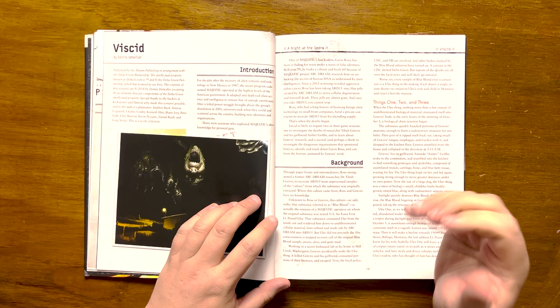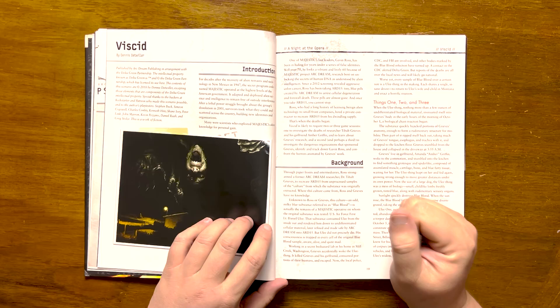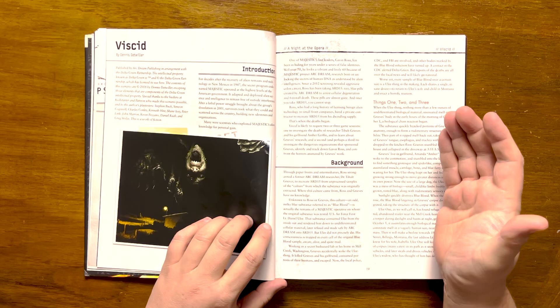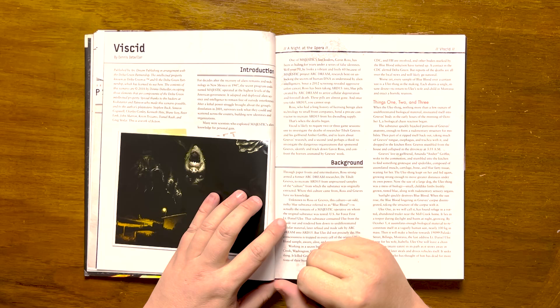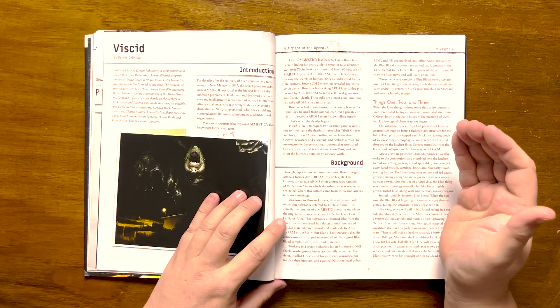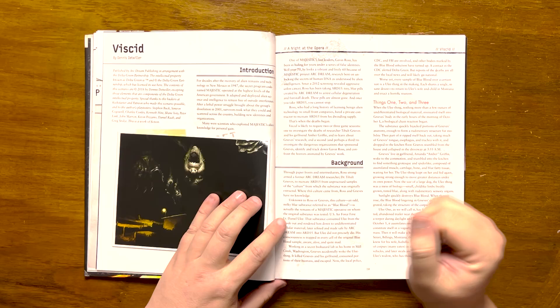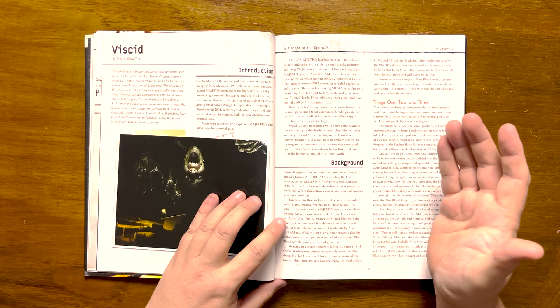Ross has coerced a former Arc Dream researcher, Dr. Tybalt Greaves, to recreate ARD-15 from some unprocessed tissue samples that it was originally extracted from. The culture known as blue blood is the remains of a Majestic operative that it was originally tested on, US Air Force First Lieutenant Daniel Uli, who was consumed and rendered down to cellular material. Uli, however, didn't exactly die. His consciousness is trapped in every cell of blue blood, something he is aware of and that has driven him insane. Greaves, working in a secret biohazard lab at his home, accidentally awoke Uli. The thing that Uli had become promptly killed Greaves and his girlfriend, devoured part of their biomass, then escaped.